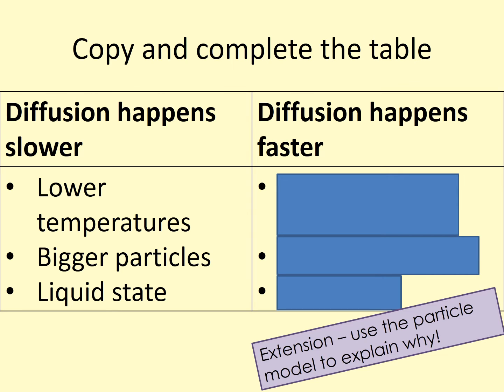Here's a table about the speed of diffusion. On the left we've got diffusion happens slower, and on the right diffusion happens faster. Diffusion happens slower at lower temperatures, with bigger particles, and in the liquid state. Try to copy this table and predict what the other side is going to be — if diffusion happens slower at lower temperatures, at what temperatures will diffusion happen faster? If it happens slower with bigger particles, what kind of particles will it happen faster with? If it happens slower in the liquid state, what state might it happen faster? Your extension is to use the particle model to explain why. Pause the PowerPoint while you write down your ideas.